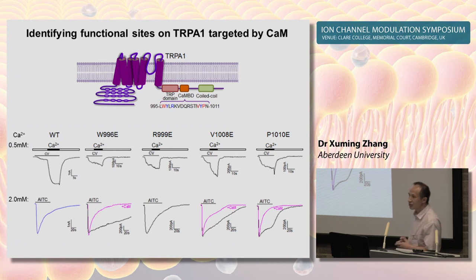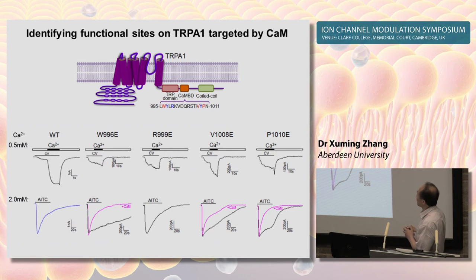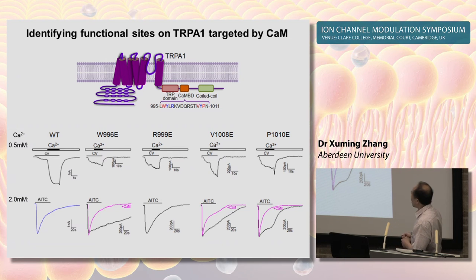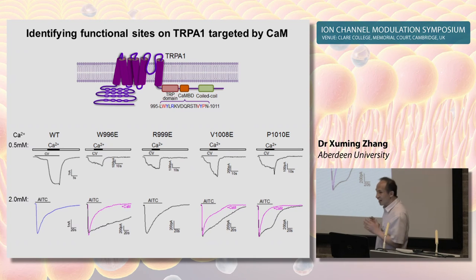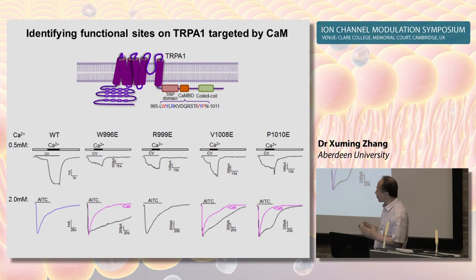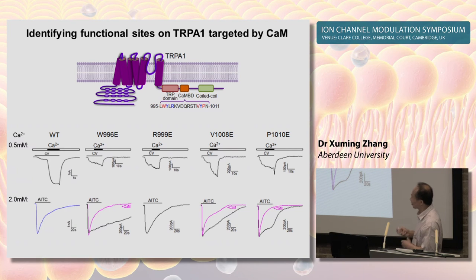This experiment further demonstrates that calmodulin-dependent regulation of TRPA1 employs a distinct but overlapping set of sites on TRPA1 channels. Altogether, our results demonstrate that calmodulin is a calcium sensor that enables TRPA1 to sense and respond to different levels of calcium distinctly, thereby imparting functional diversity to the channel.